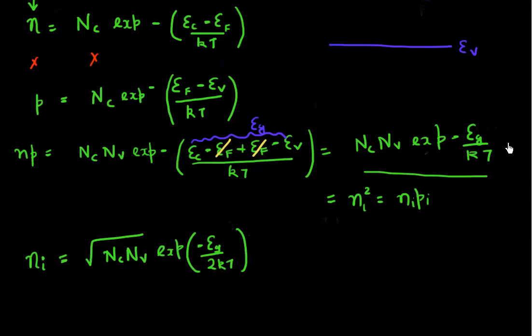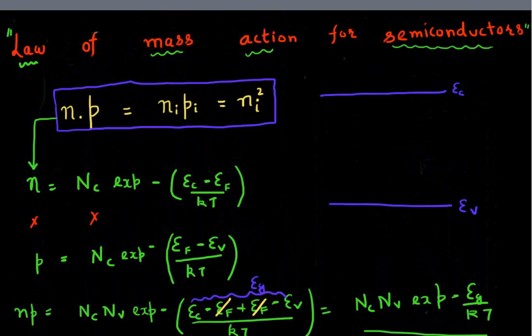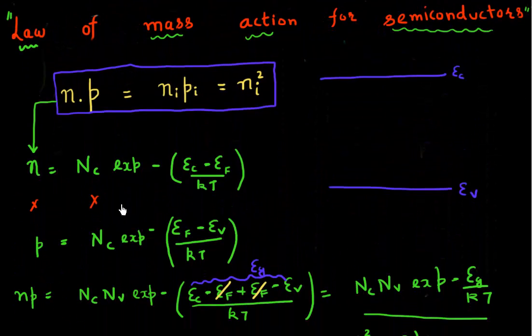So using these relationships for the electrons and holes, we see that if you multiply the concentration of electrons and holes, it comes out to be a constant which just depends upon the temperature, and it's equal to the square of the intrinsic carrier density. But let me build some more intuition as to why this is the case.